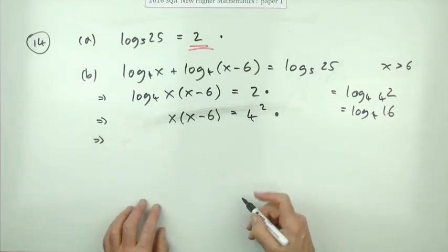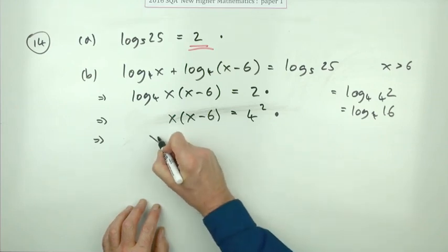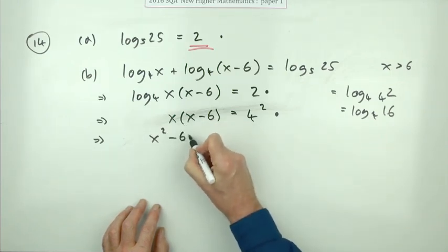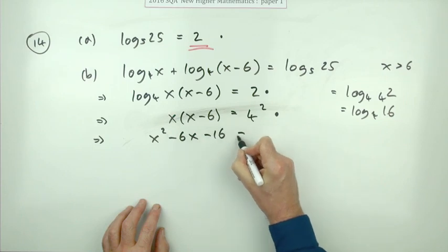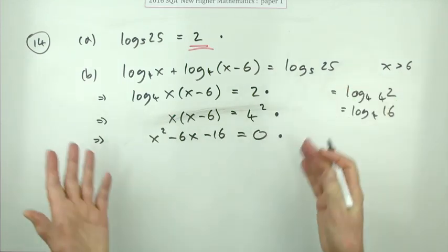Bring it all to one side because this is going to be a quadratic: x squared minus 6x minus 16 equals 0. That gets you a mark.